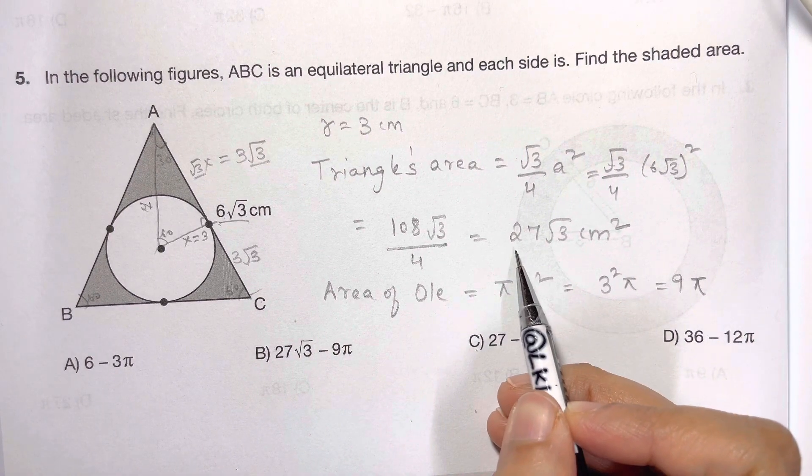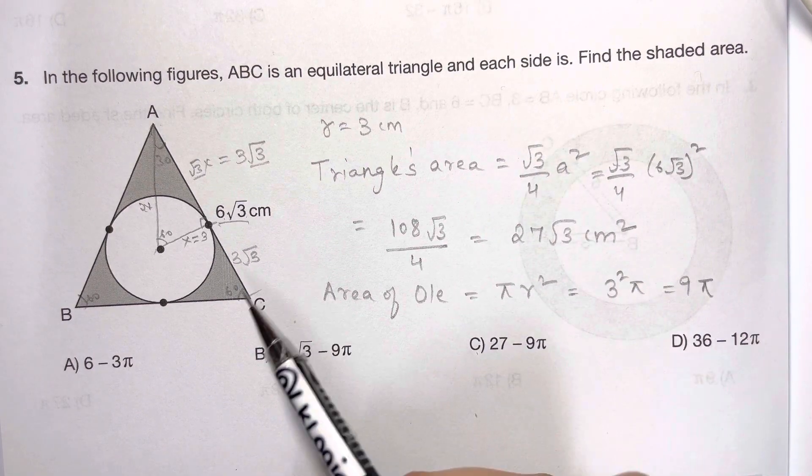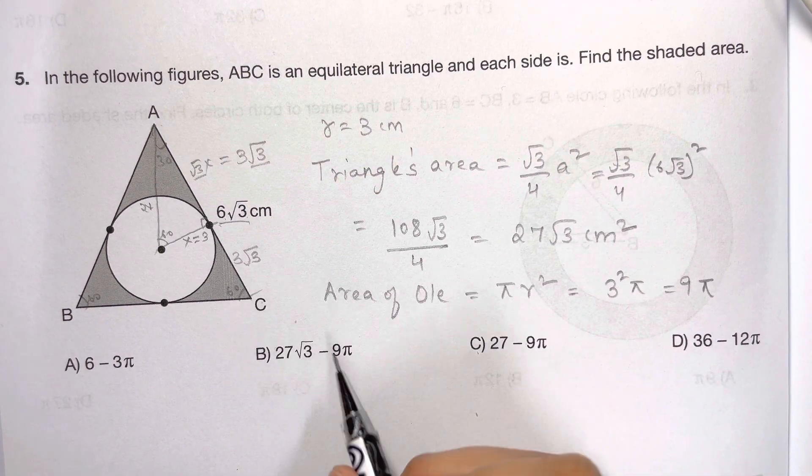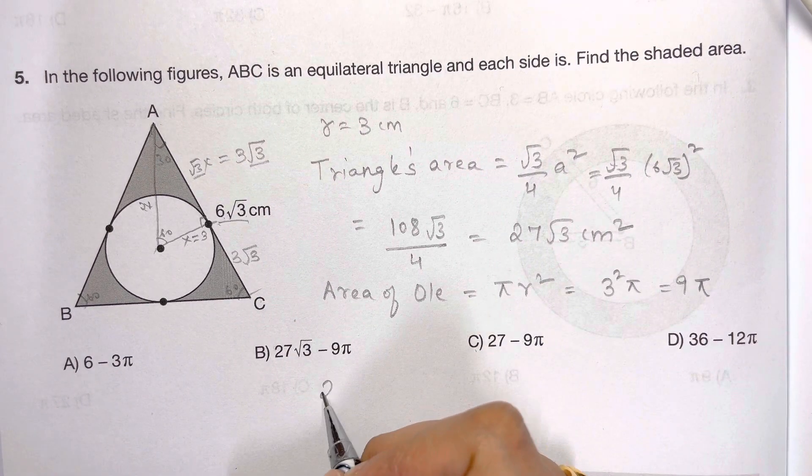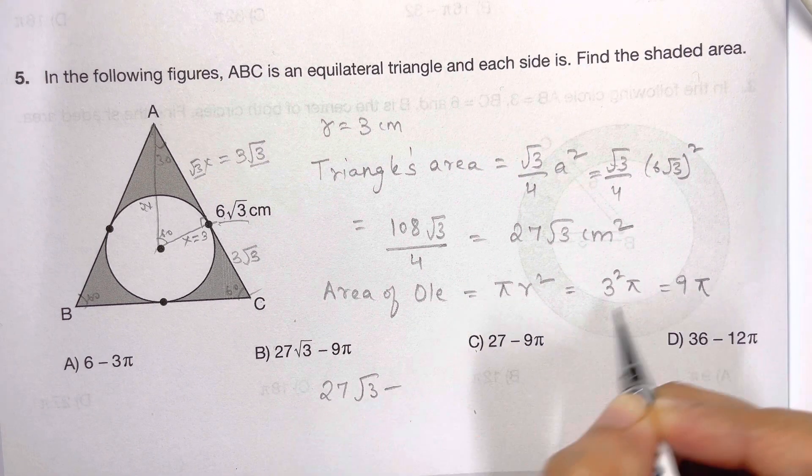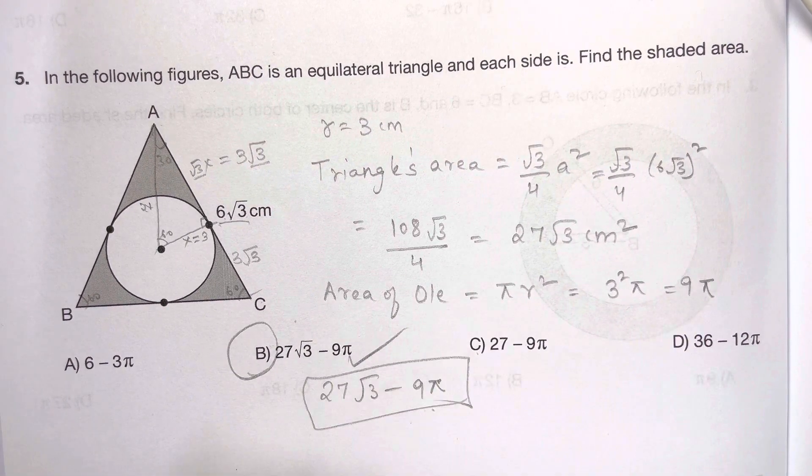Now I've got area of the triangle, area of circle. To find the shaded area, just subtract the area of circle from area of triangle. So we have 27√3 minus 9π, and that's your answer, choice B.